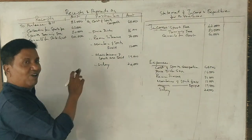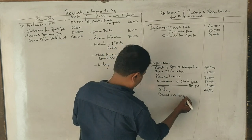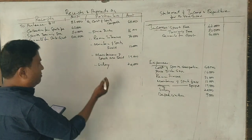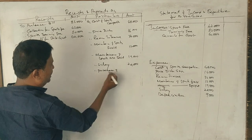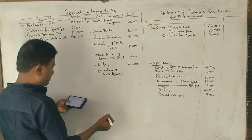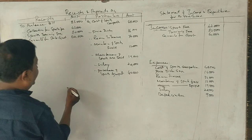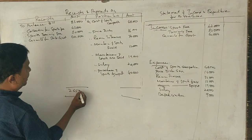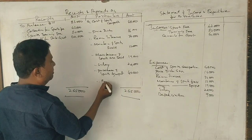Depreciation, does it go to receipts and payments? No. Does it go to income and expenditure? Yes, 9,000. Purchase of sports equipment, does it go? No. Purchase of sports equipment, 40,000.